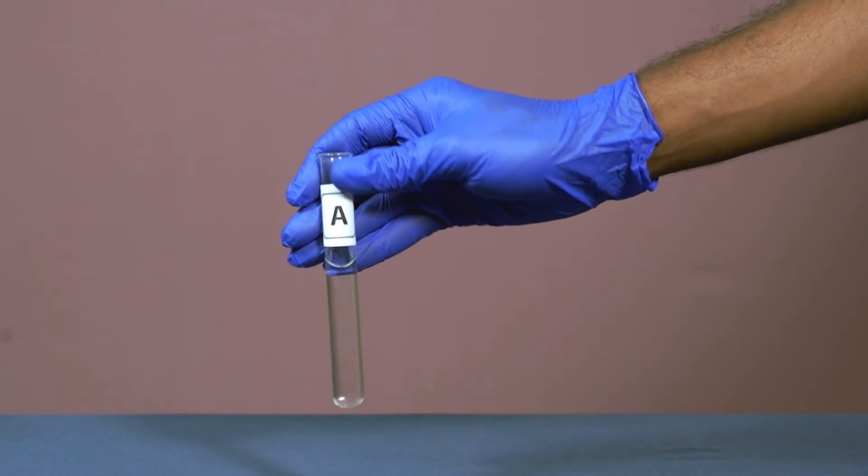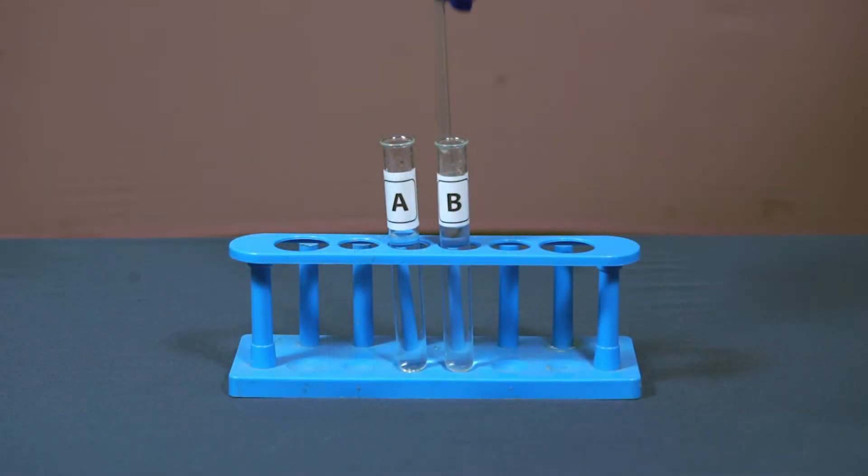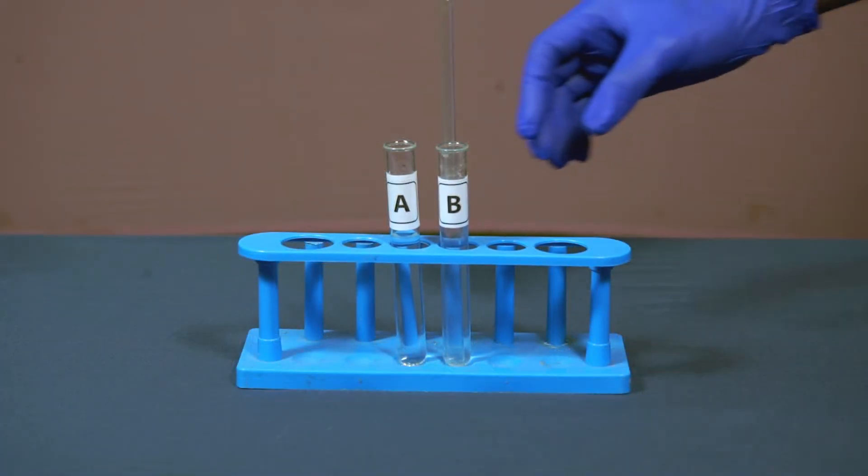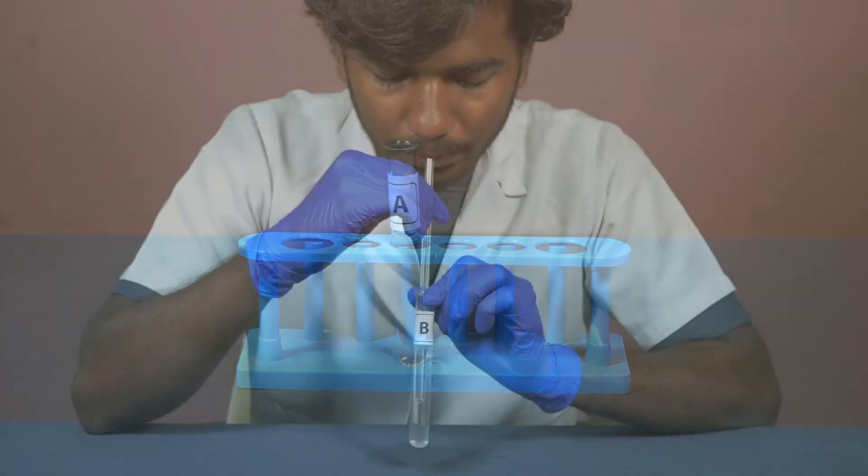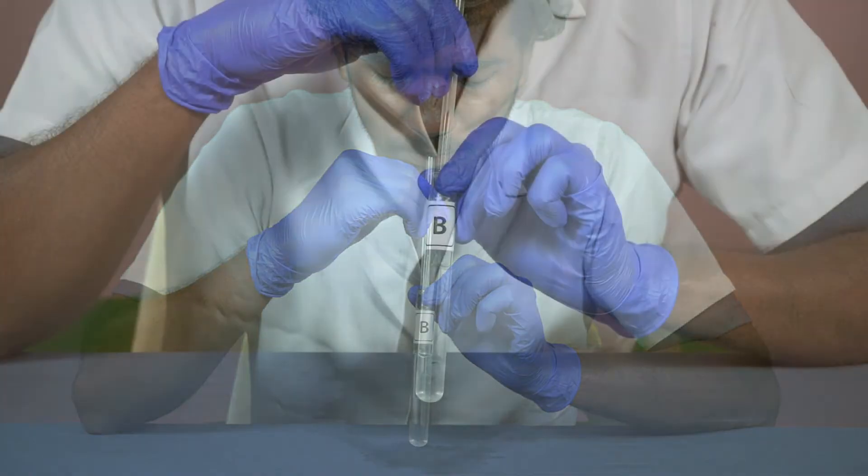Shake the test tube. Place the glass tube straw into test tube B. Now blow air into test tube B for two to three minutes.